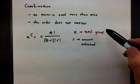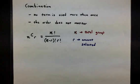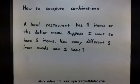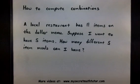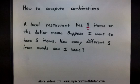So let's go back to our problem and see if we can identify the total number in the group and how many we are selecting from that group. So at this restaurant, there are 11 items on the dollar menu. That's the entire group that we will be selecting from.